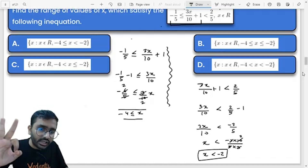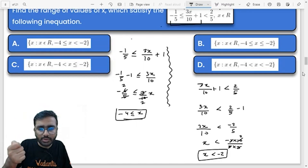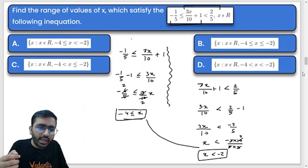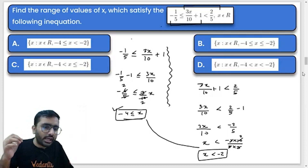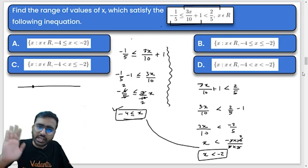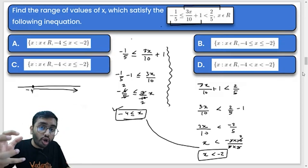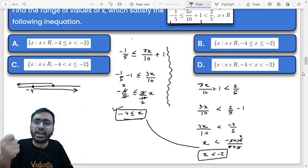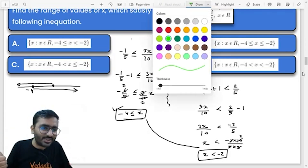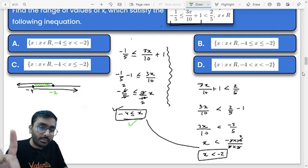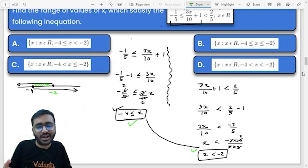So now we know: from the first inequality, x is greater than or equal to minus 4, and x belongs to real numbers. From the second inequality, x is lesser than minus 2. The green area — the common area — is from minus 4 to minus 2. So x can equal minus 4 but cannot equal minus 2. Minus 4 to minus 2, with minus 4 included and minus 2 excluded.